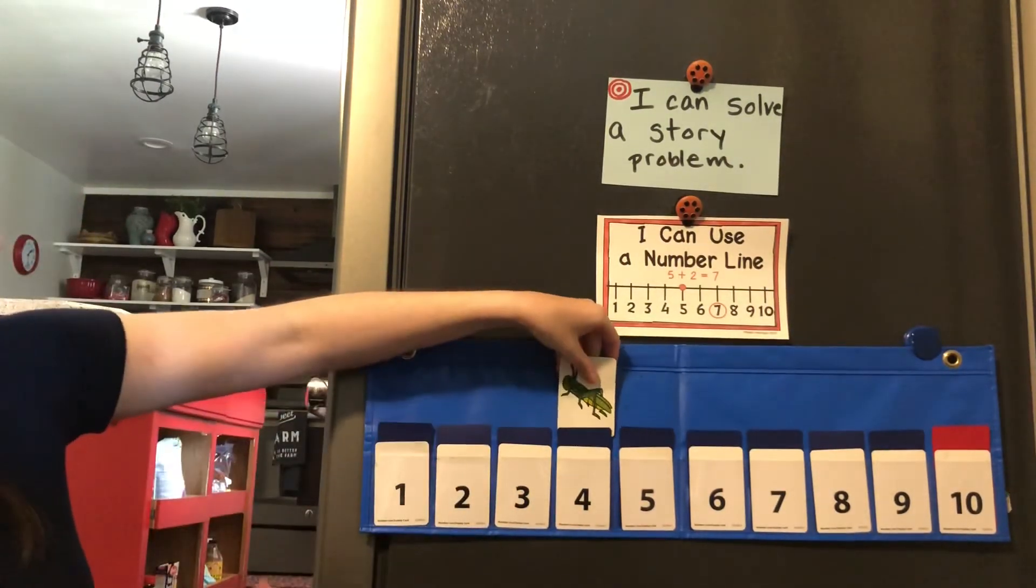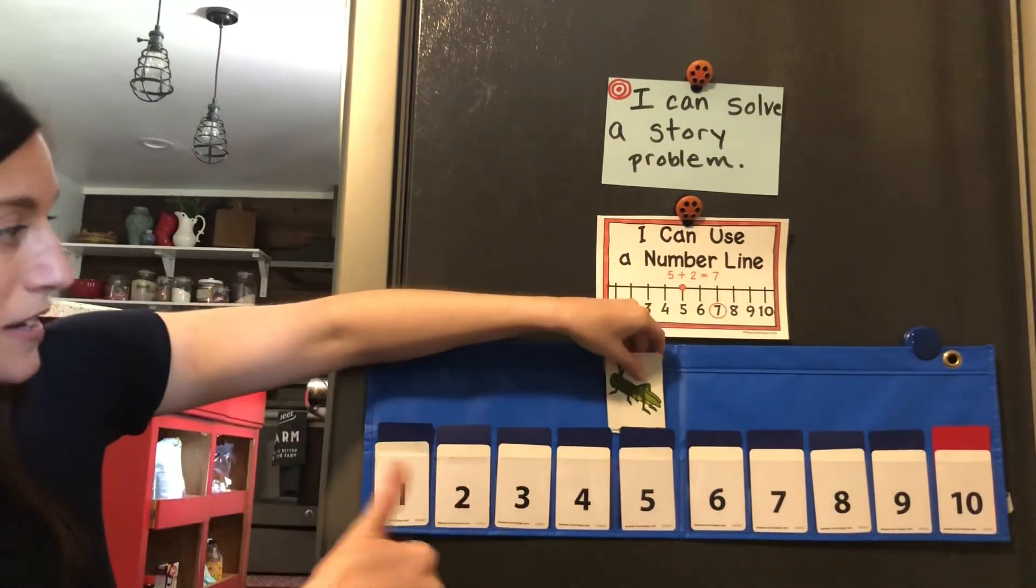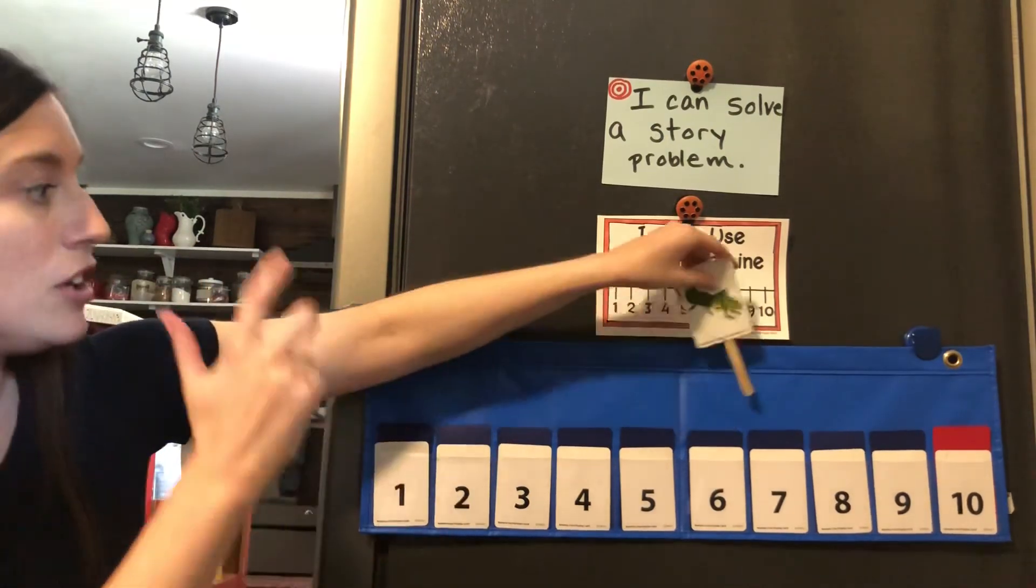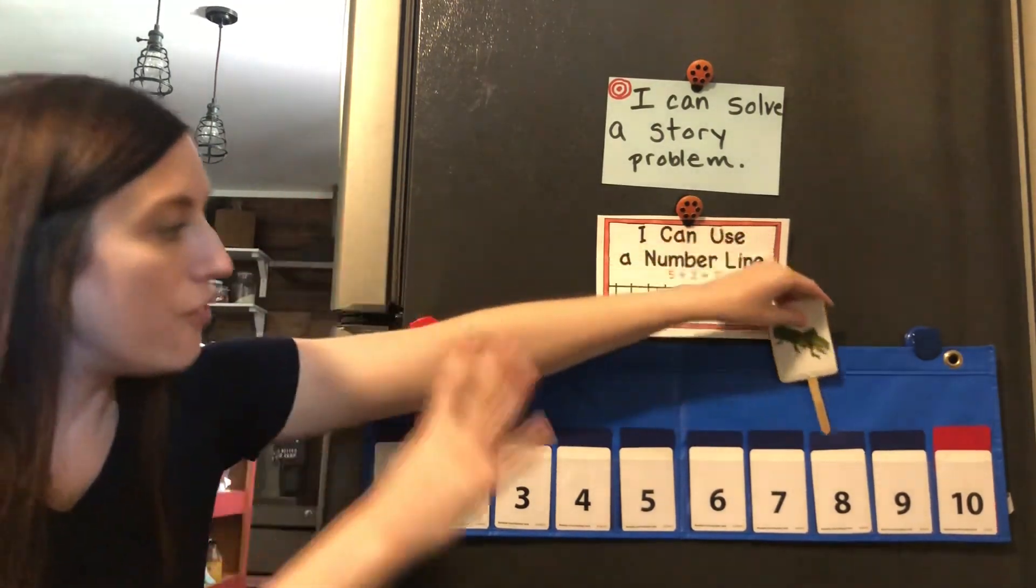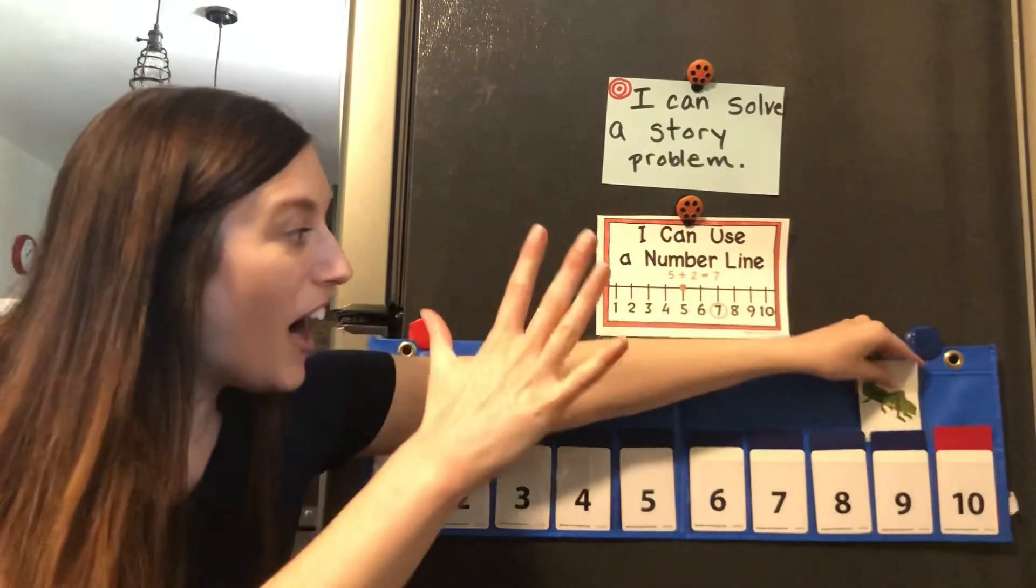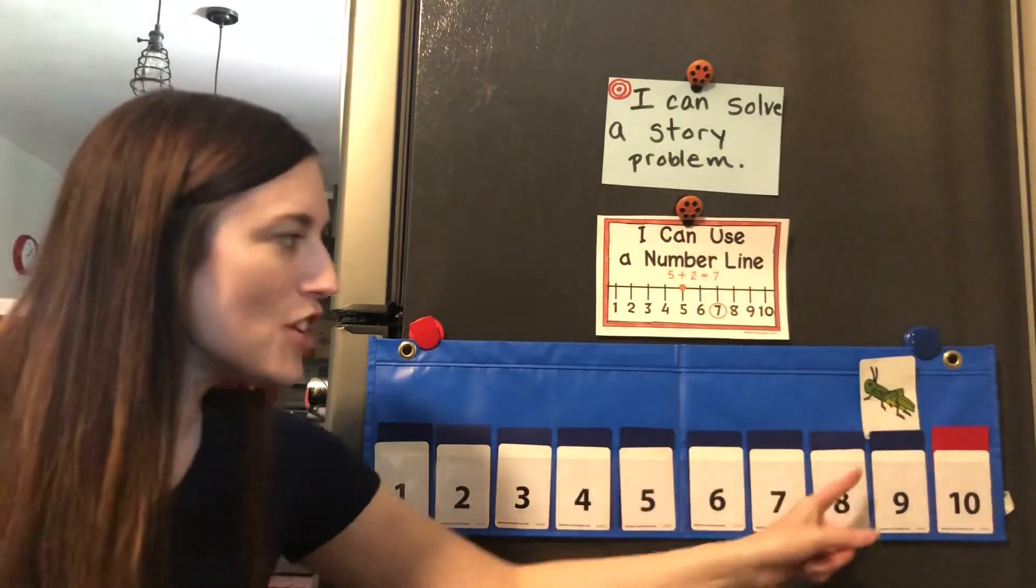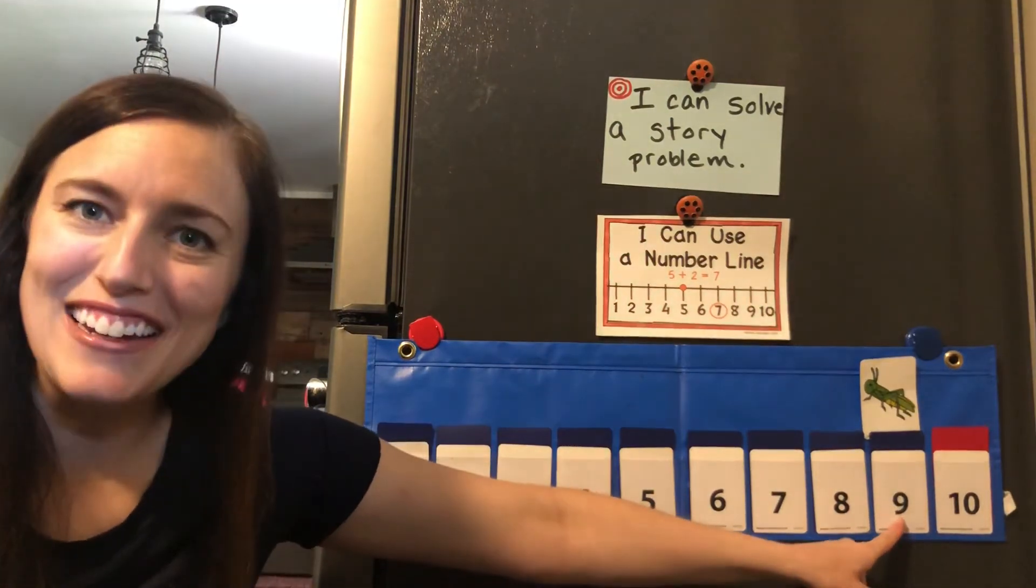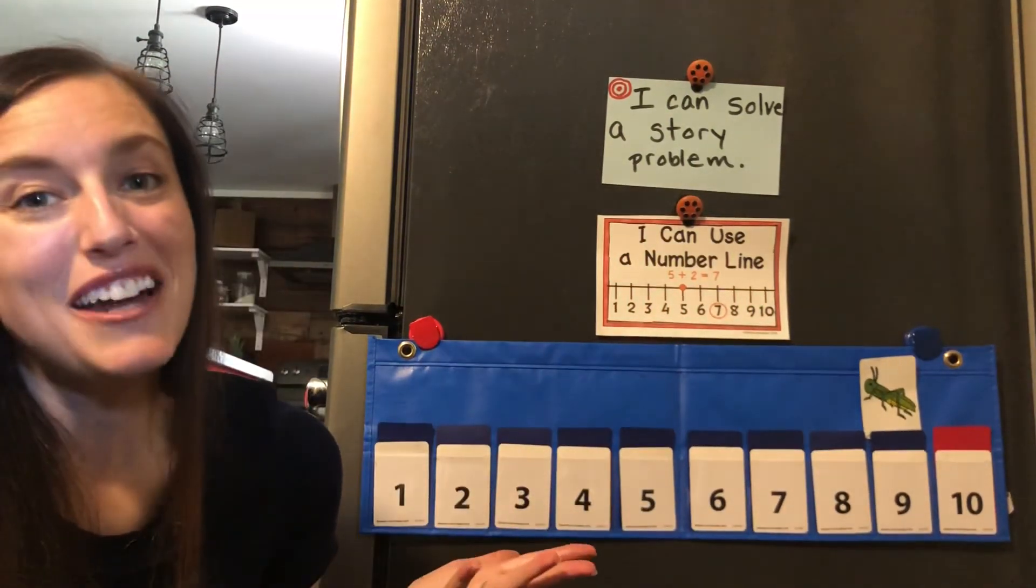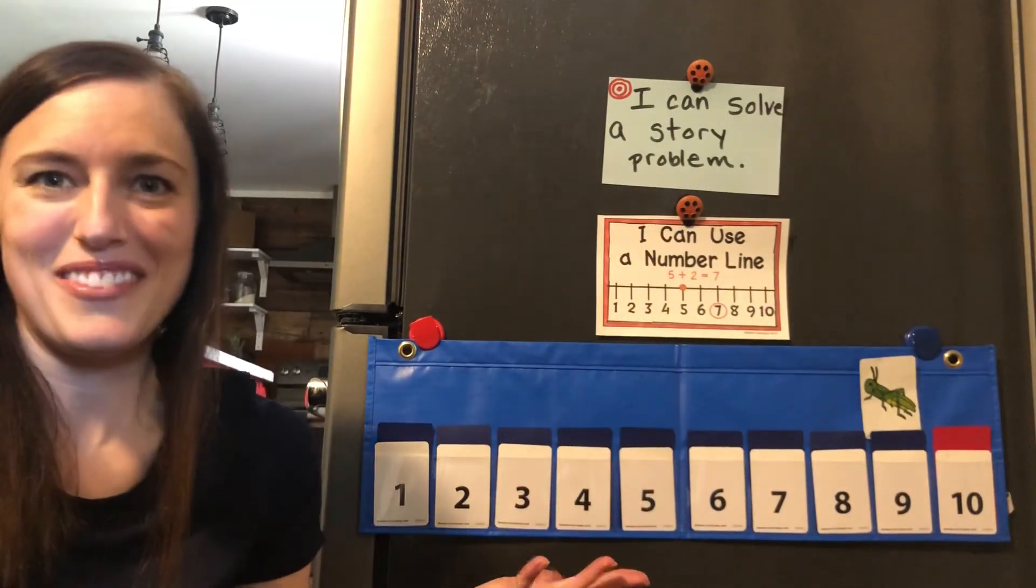Okay, one, two, three, four, five. Four and five jumps makes nine. Marco must have had nine puppies.